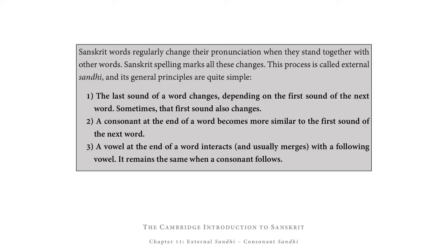External Sandhi can be summed up as follows. Sanskrit words regularly change their pronunciation when they stand together with other words, and Sanskrit spelling marks all these changes. This process is called external Sandhi and its general principles are quite simple: 1. The last sound of a word changes depending on the first sound of the next word, and sometimes that first sound also changes. 2. A consonant at the end of a word becomes more similar to the first sound of the next word. 3. A vowel at the end of a word interacts and usually merges with a following vowel, but remains the same when a consonant follows.